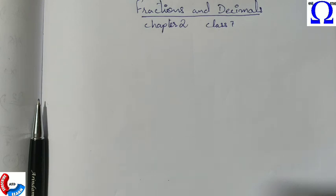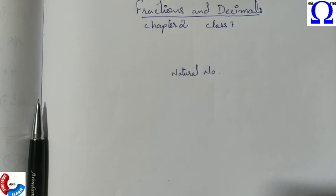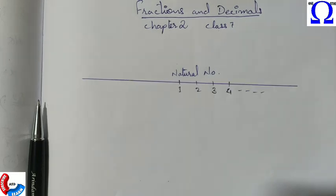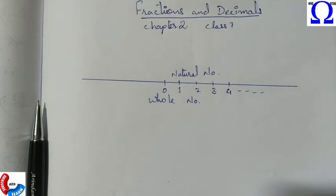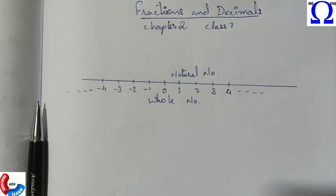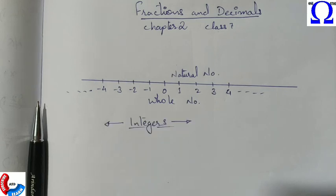As we have studied earlier, we have certain kinds of numbers in our number system. The first one was natural numbers — the number line starting from 1 to infinity. If we include zero, we get whole numbers. And in the first chapter, we studied that if we consider negative numbers also, that number system is called integers.